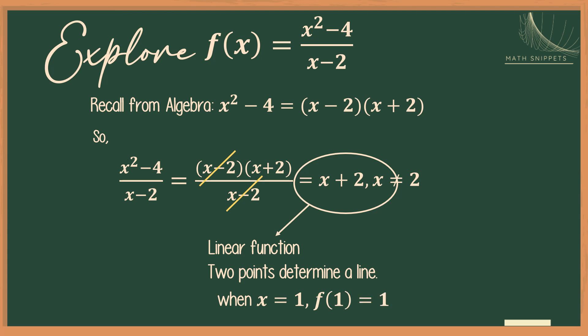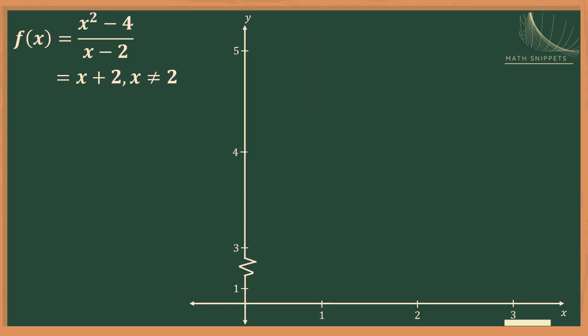When x is 1, the value of my function would be, I'll just substitute 1 to x, so I would have 1 plus 2 equal 3. Therefore, I have a point 1, 3 on the graph of f of x. Now let us locate point 1, 3 on the Cartesian plane. Now this is point 1, 3 on the Cartesian plane.